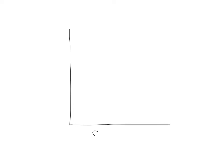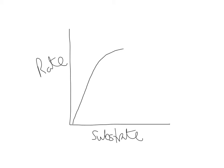We have here a graph showing as you increase substrate concentration, you increase the rate up to a point and then it levels off, because it doesn't matter how much more substrate you add — you've run out of active sites.